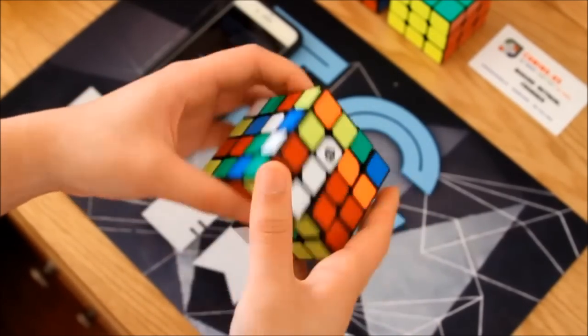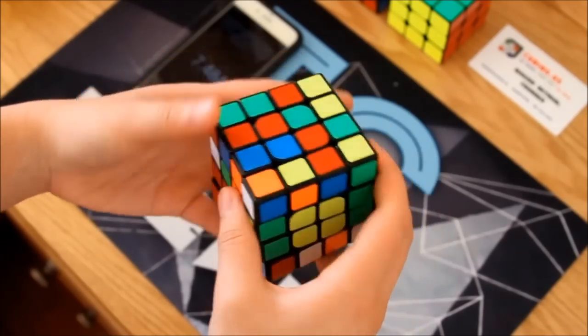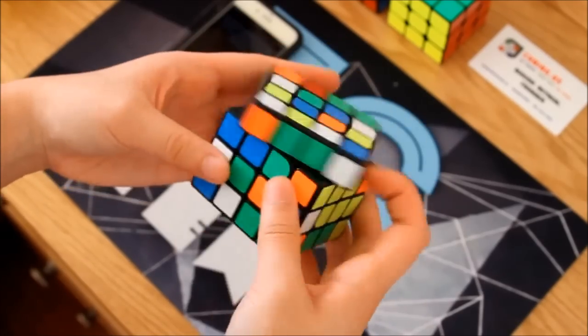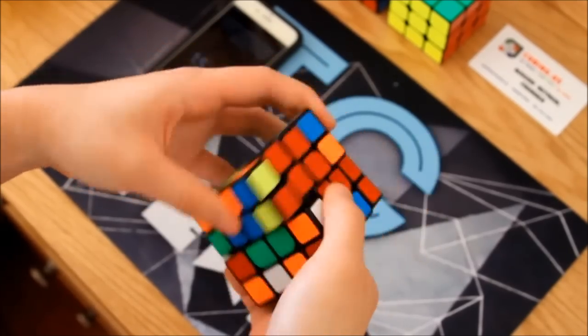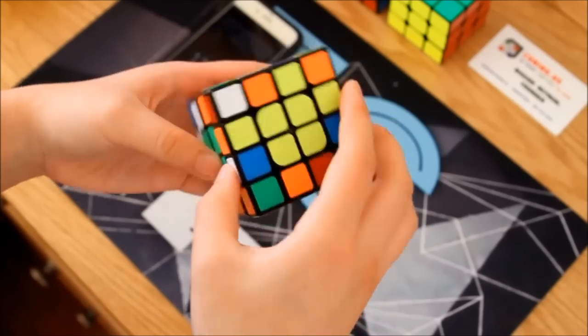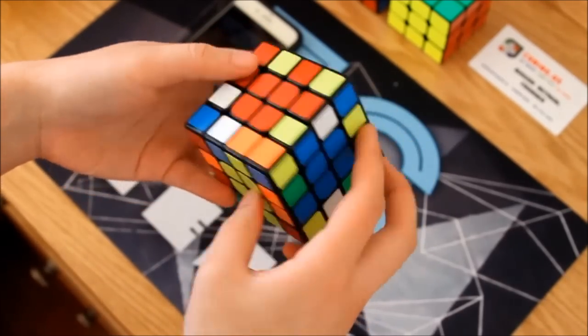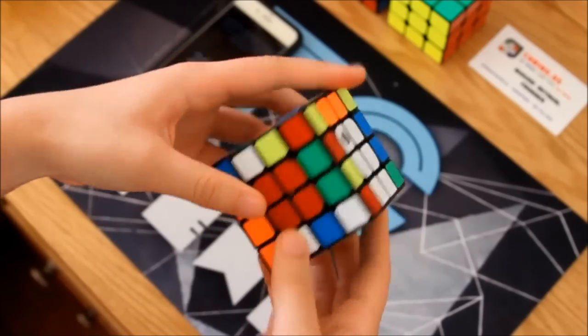And so the thing that most attracted me to their website was this charity that they hold called Cubes for Kids. And so if you haven't guessed it by the name already, they essentially donate cubes to kids. And so they have these two cubes listed on their site as the cutie cube and the warrior cube. And so once those are purchased, they're able to globally donate kids, not kids, they donate cubes.